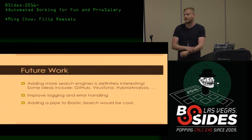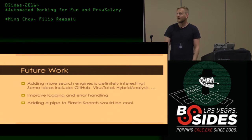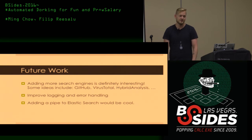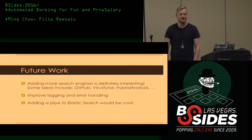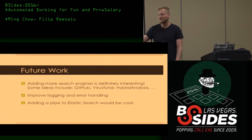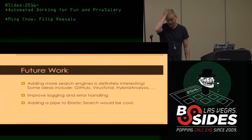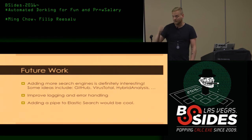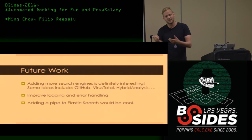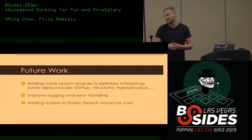For future things, I'd like to add more search engines — GitHub, VirusTotal, and Hybrid Analysis are some ideas. Some better logging and error handling — I've been a bit lazy but I'm working on improving it. Adding a pipe to Elasticsearch I think would be cool if someone wants to set up their own instance. The way I'm currently using this is running it in our production system and piping results into our platform where we have alerting capabilities.